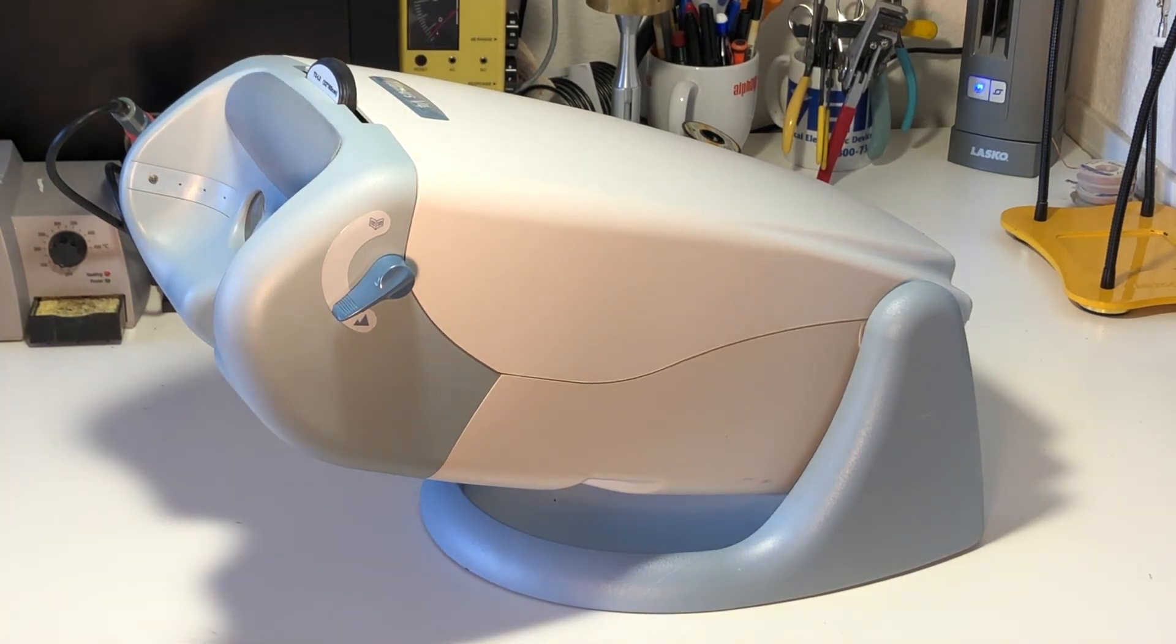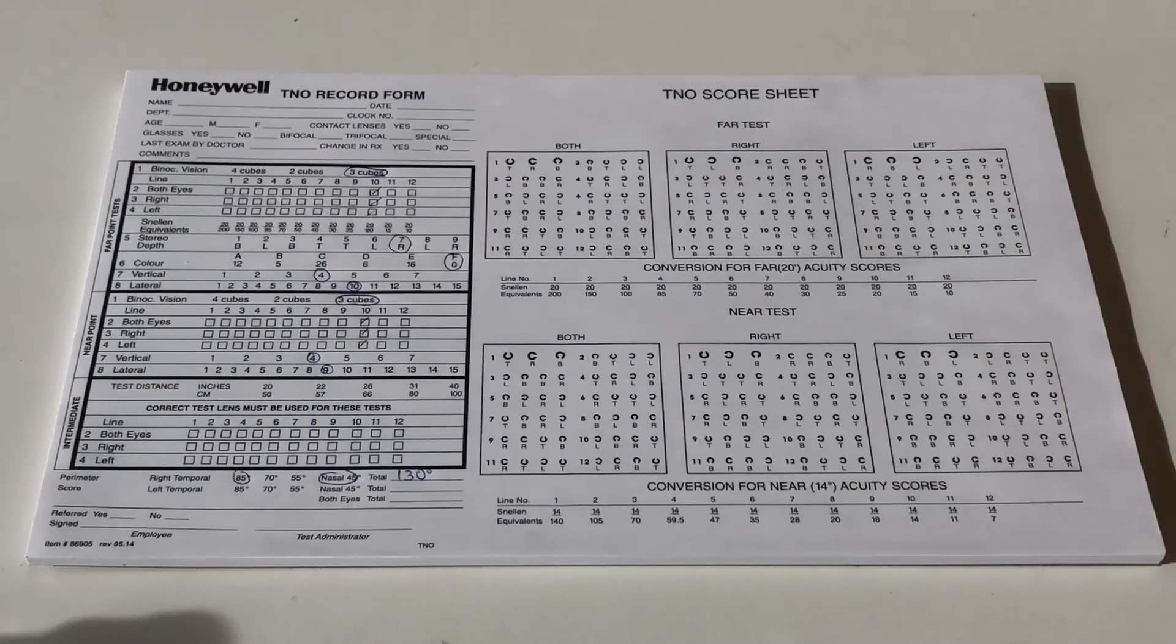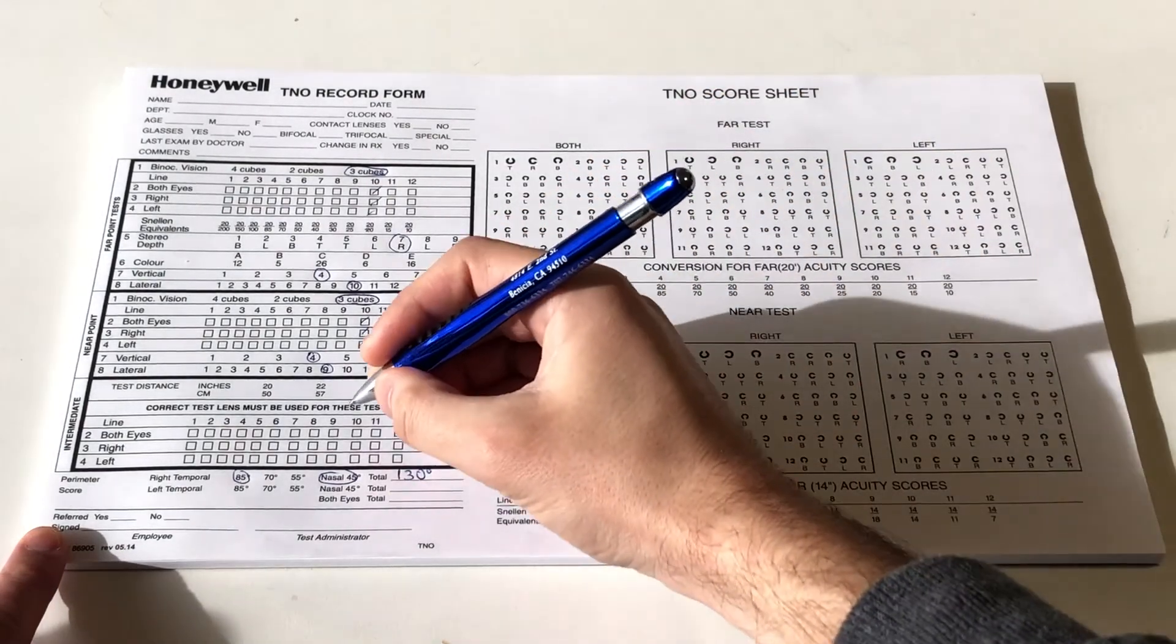Repeat the procedure for slides 2, 3, and 4. Record the results in the intermediate box of the record form.